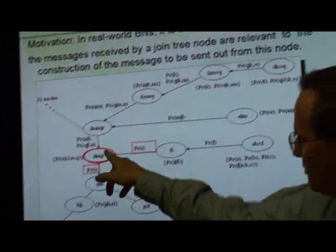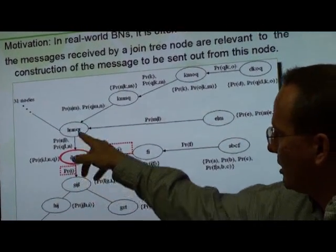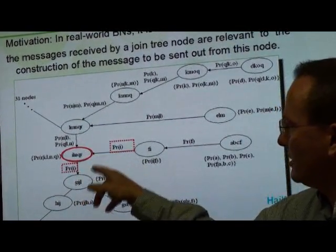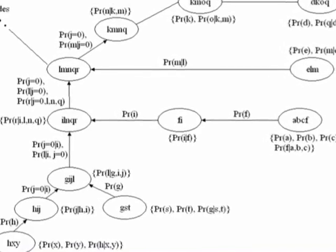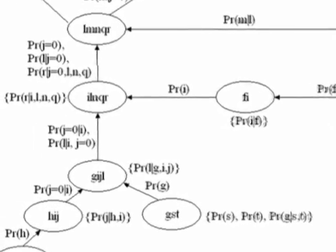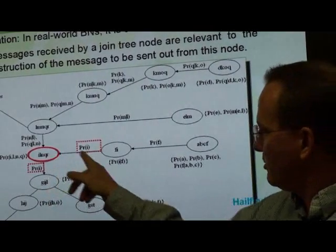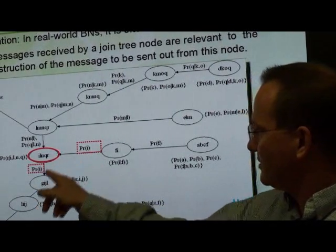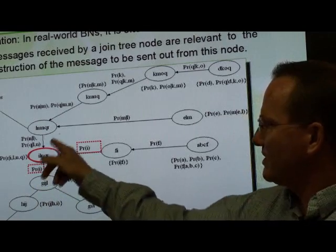That other algorithm would say this node cannot send its messages until it's received three messages. But since we know the structure of the messages, we can see that this is the same distribution. So this node is just going to be forwarding this one distribution and it doesn't need these other two.